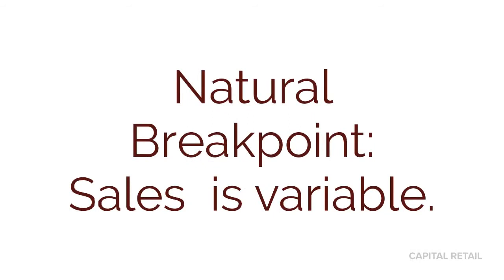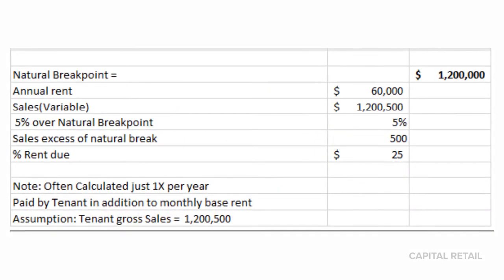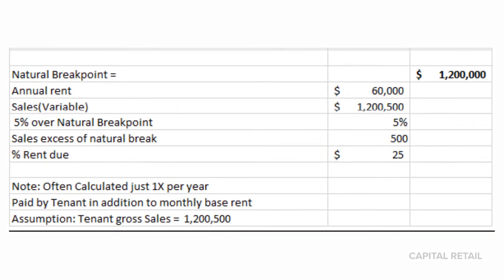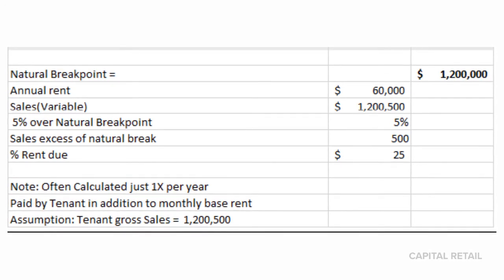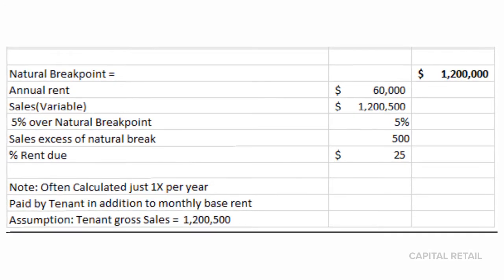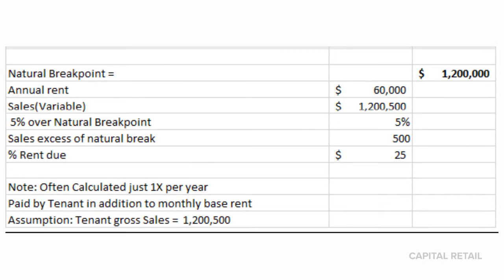With the natural breakpoint, sales is the key variable to determine the natural breakpoint and the amount that's owed. In this example, the natural breakpoint is $1.2 million. That's simply taking the annual rent and dividing it by the sales percentage — giving us $1.2 million, with an overage of $500.